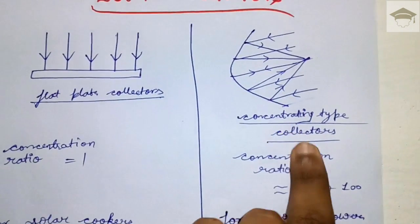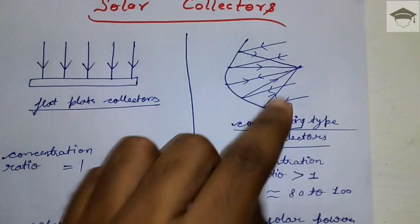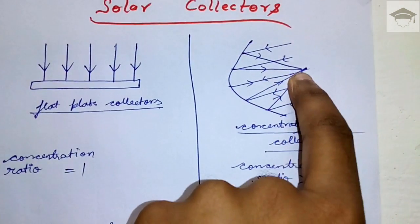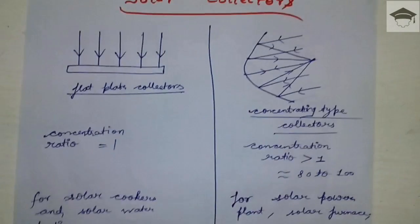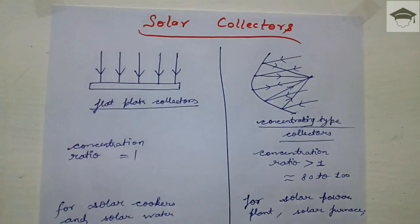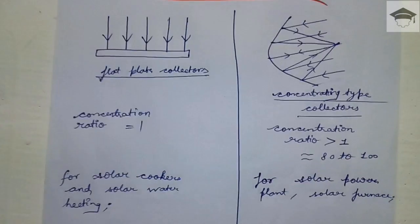Flat plate collectors are used for solar cookers and solar water heating. Concentrating type collectors are used for solar power plants, solar furnaces, and heliostat solar power plants.